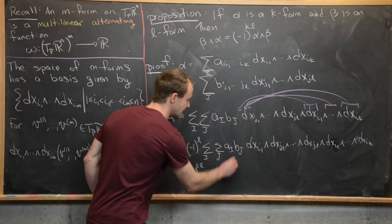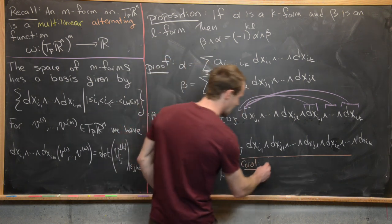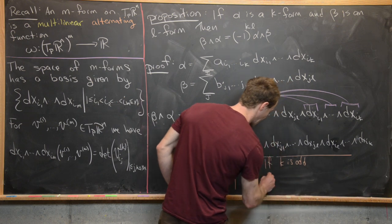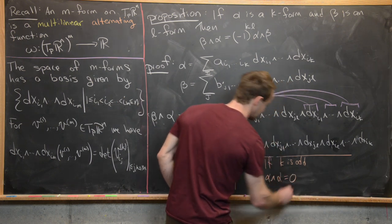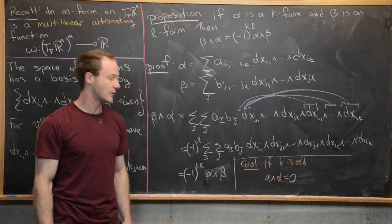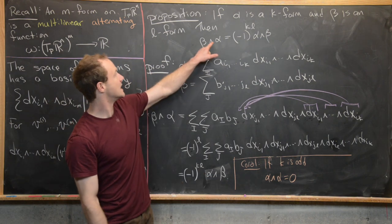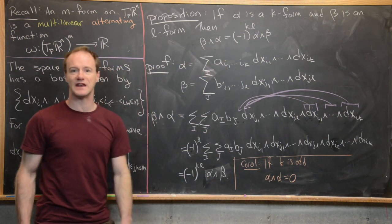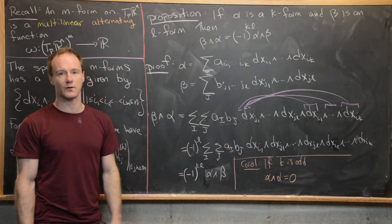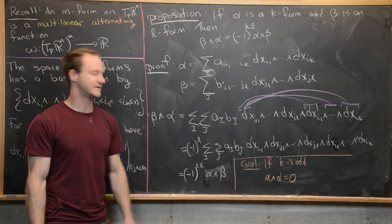A quick corollary: if k is odd, then α ∧ α = 0. This follows because switching α with α leaves the expression unchanged, but the proposition says it should pick up a factor of (−1)^(k·k) = (−1)^(k²) = −1 when k is odd. The only element equal to its own negative is zero, so α ∧ α = 0. This may not hold when k is even.